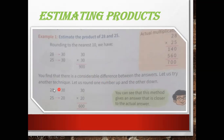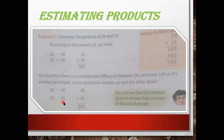Since there is a considerable difference between the answers, let us try another technique: round one number up and the other down. So 28 rounded up to the nearest 10 gives 30, and 25 rounded down gives 20.